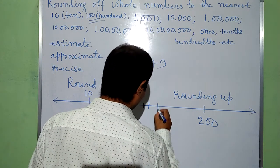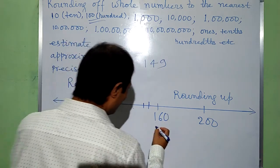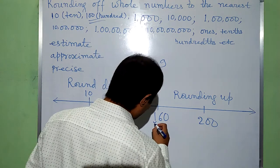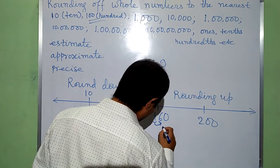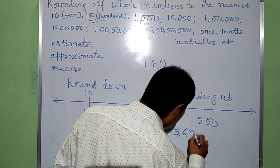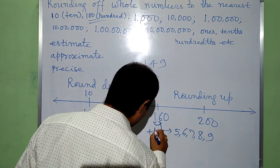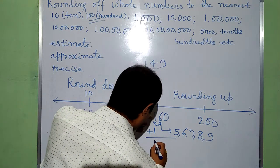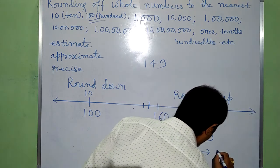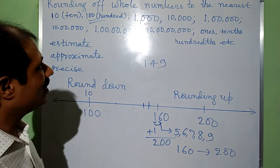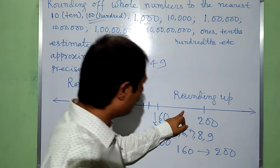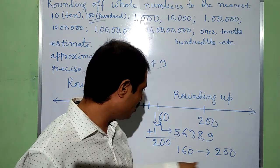Now, what will happen if the number is 160? The target digit is 1 at the hundreds place. We look just to the right of this digit — that is the tens digit, which is 6. Since 6 is 5 or greater, we add 1 to the target digit: 1 plus 1 gives 2, and the rest of the digits are changed to 0. So 160 rounded to the nearest multiple of 100 is 200. This is rounding up — 200 is rounded up from 160.